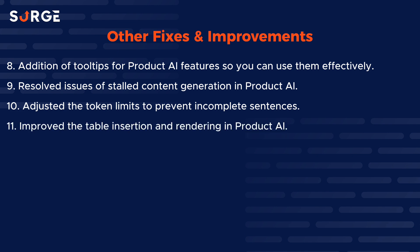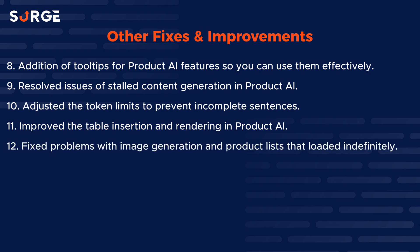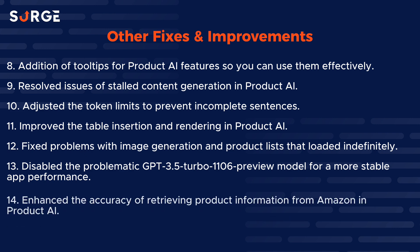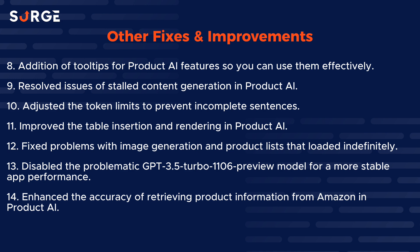Number 11, we improved the table insertion and rendering in Product AI. Number 12, we fixed problems with image generation and product lists that loaded indefinitely. Number 13, we disabled the problematic GPT-3.5 Turbo 1106 preview model for more stable app performance. And last but not least, we enhanced the accuracy of retrieving product information from Amazon in Product AI.